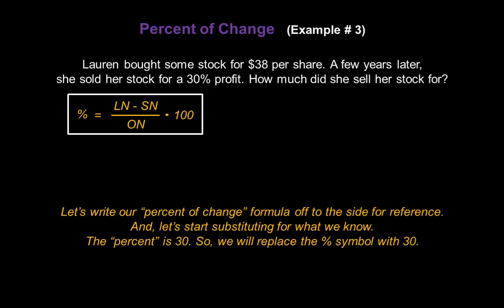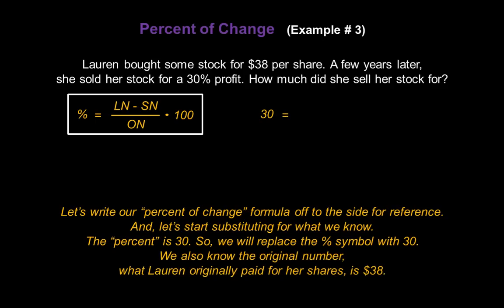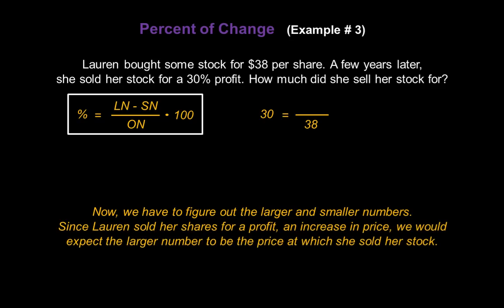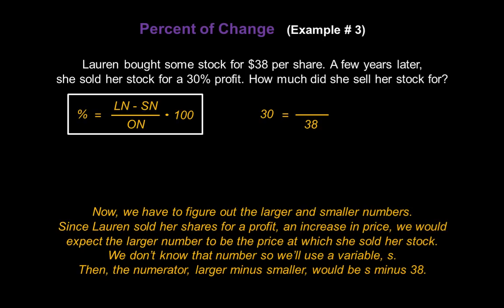Now let's substitute what we know. The percent is 30, so we replace the percent symbol with 30 and write 30 equals. We also know the original number — what Lauren originally paid, which is $38 — so we replace On in the denominator with 38. For the numerator, since Lauren sold her shares for a profit (an increase), the larger number is the price she sold at, which is what we don't know. We'll use variable s for the larger number. The numerator becomes s minus 38. Don't forget to multiply by 100.